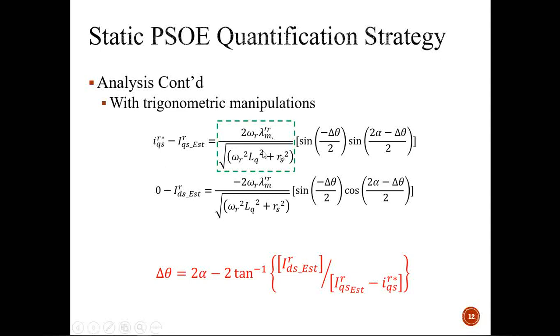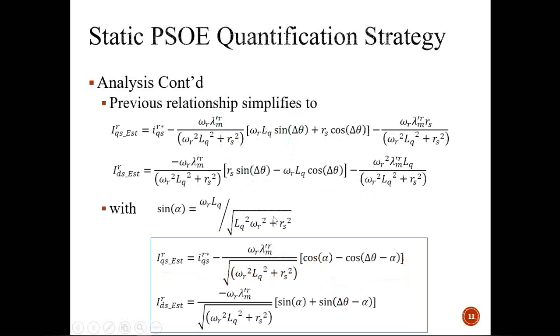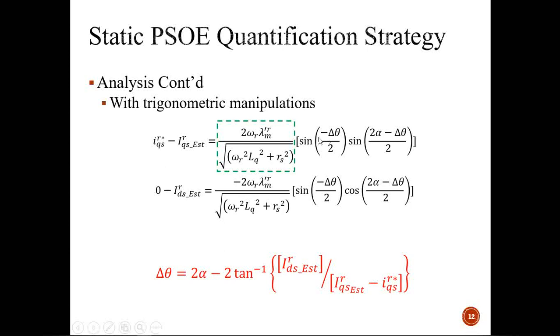Looking at the two equations, i_d error and i_q error, assuming i_d reference is zero for a non-salient machine, they have the same amplitude. We did some trig manipulations and when we take the ratio of the two, these amplitude terms which are dependent on parameters and speed cancel out, giving us a very nice result that we can use to obtain the induced position error. This is the relationship we are going to implement in both simulation and experimental results.